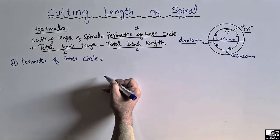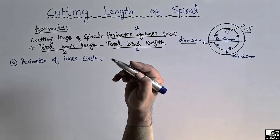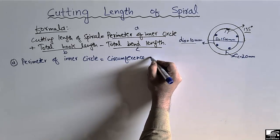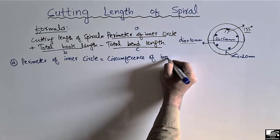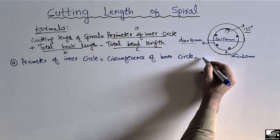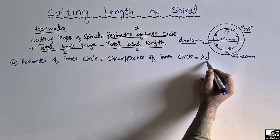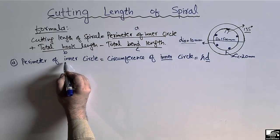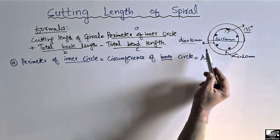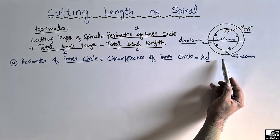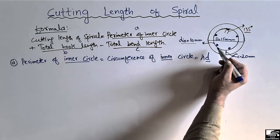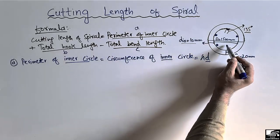The perimeter of the inner circle is equal to the circumference of the inner circle, since perimeter and circumference are equivalent for a circle. The formula for circumference is π × d, where d is the diameter. π is a constant equal to 3.14. We are interested in the inner circle diameter because the spiral runs along the inner circle, not the outer circle.